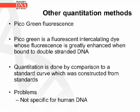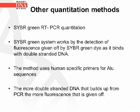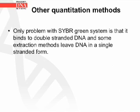The picogreen fluorescence method uses picogreen, which is a fluorescent intercalating dye whose fluorescence is greatly enhanced when bound to double-stranded DNA. Quantitation is done by comparison to a standard curve constructed from standards. The problem with this is that it was not specific for human DNA. The cybergreen real-time PCR quantitation system works by the detection of fluorescence given off by the cybergreen dye as it binds with double-stranded DNA. The method uses human-specific primers for ALU sequences. The more double-stranded DNA that builds up from PCR, the more fluorescence that is given off. The only real problem with the cybergreen system is that it binds to double-stranded DNA, and some extraction methods leave DNA in a single-stranded form.